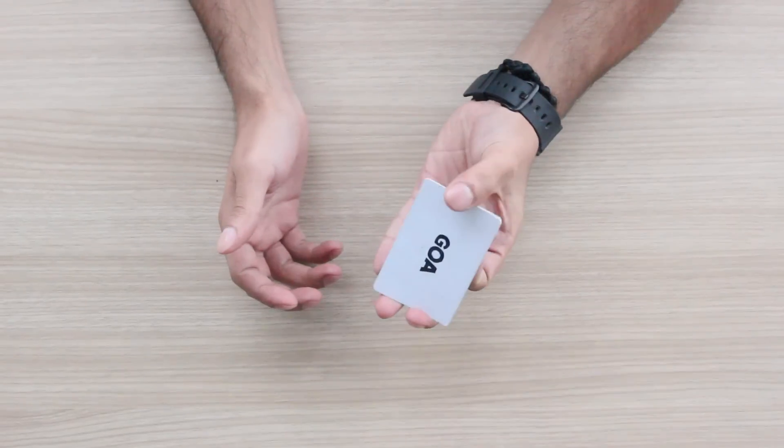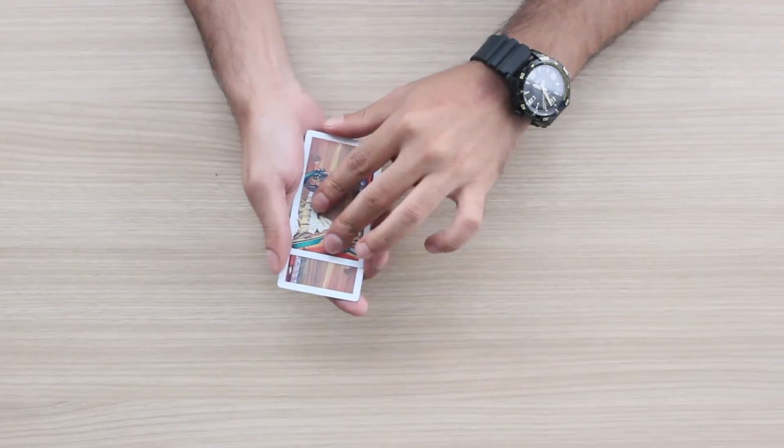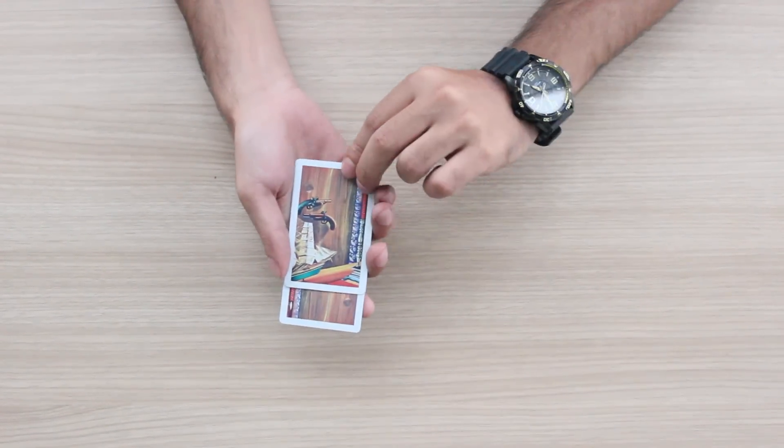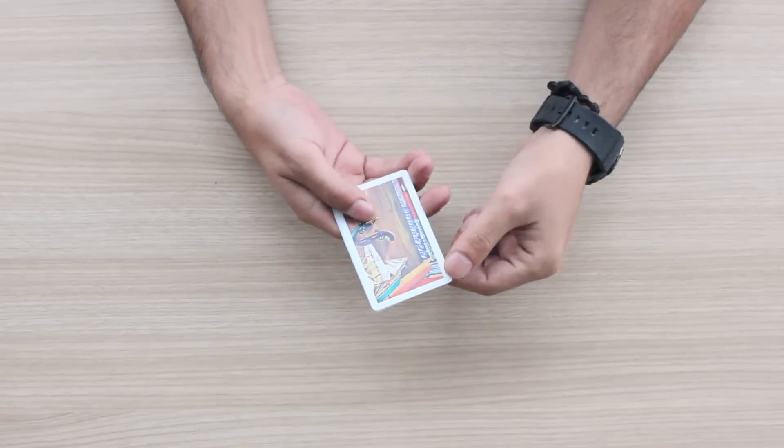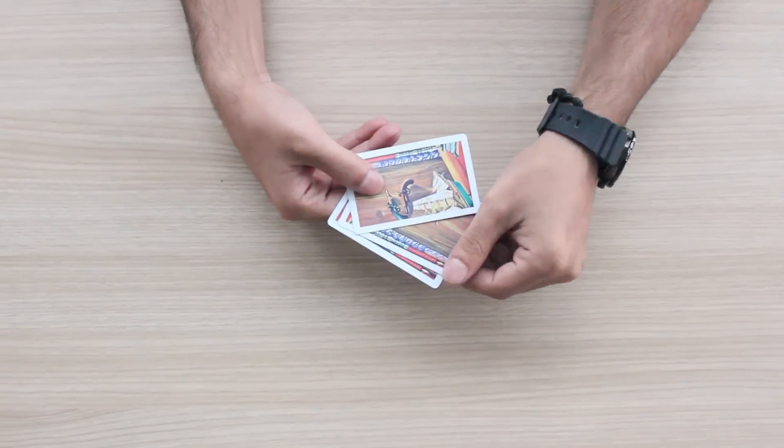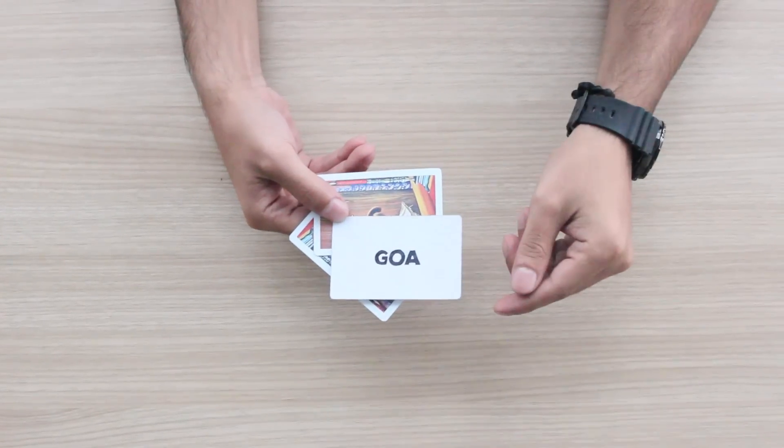He says no, that's the Goa card. I said fine, if Goa is at the bottom, then Manali must be on the top. He says no, that's also the Goa card. I said alright, if Goa is at the top and the bottom, then Manali must be in the middle. He says no, that's also the Goa card.